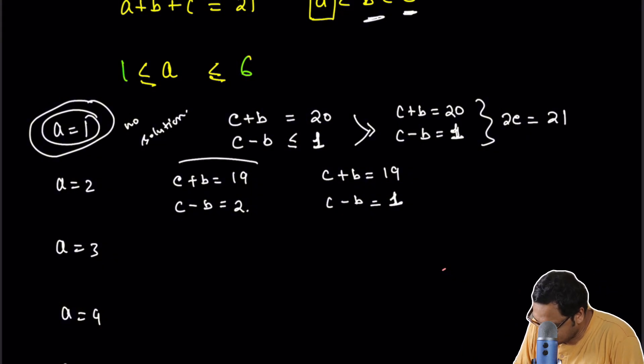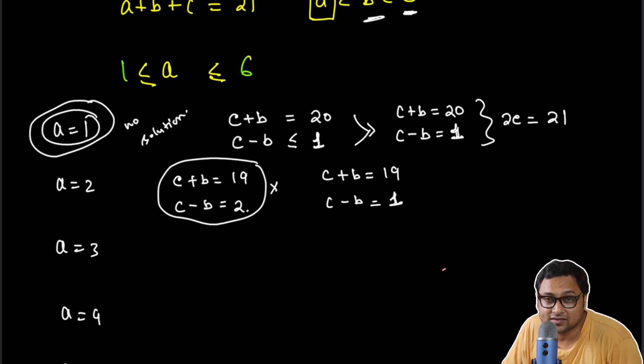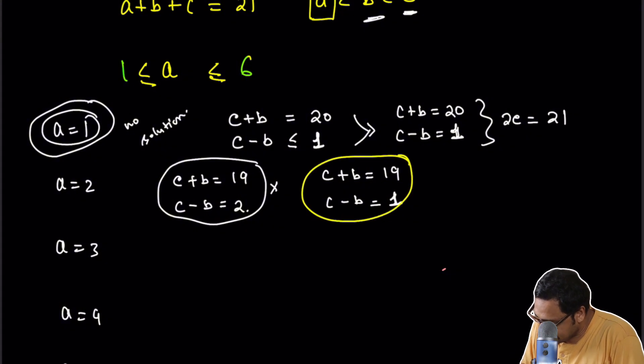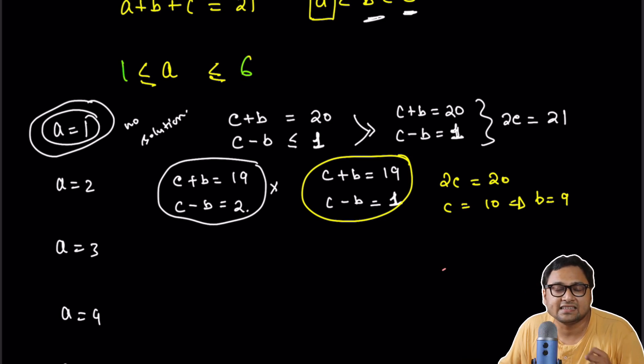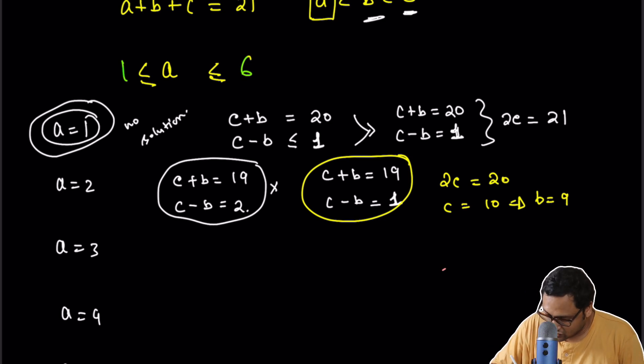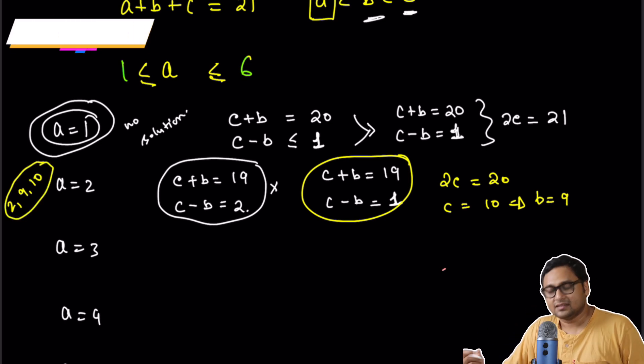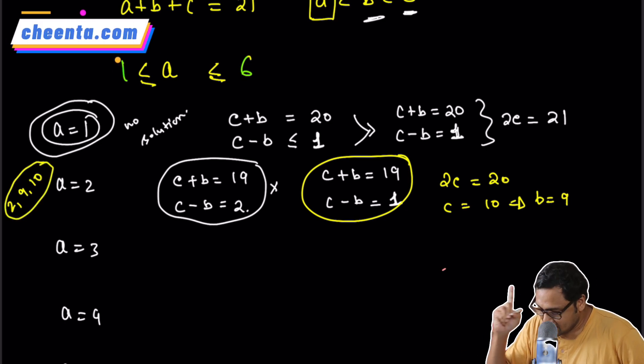Obviously this one will not work because again 2C is 21, so C is 10.5. But we know ABC are integers, so we can just work with the second one where 2C is 20 or C is equal to 10 and then B is equal to 9. So C is equal to 10, B is equal to 9, A is equal to 2. That's a solution: 2, 9, 10. Excellent, so we have one solution.